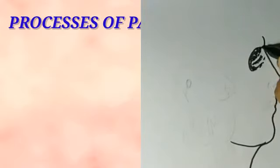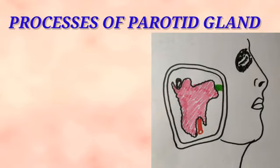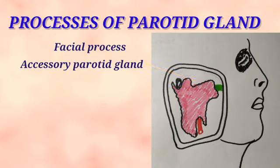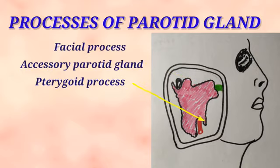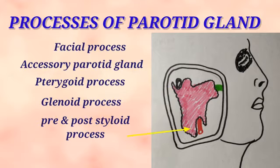The processes of the parotid gland are extensions of the gland. One such process, the facial process, is present superficial to the masseter muscle and is triangular in shape. The accessory parotid gland is a small detached part of the main gland present between the zygomatic arch and the parotid duct, and is also considered a process of the gland. The pterygoid process is present from the deeper part of the gland between the mandibular ramus and the medial pterygoid muscle. The glenoid process extends upwards between the external meatus and the temporomandibular joint. Similarly, pre- and post-styloid processes are extensions of the gland related to the styloid process of the temporal bone.